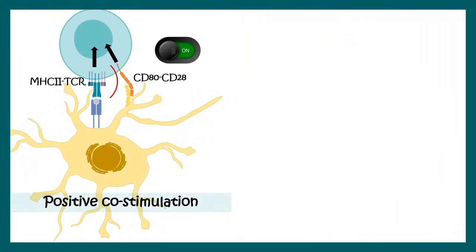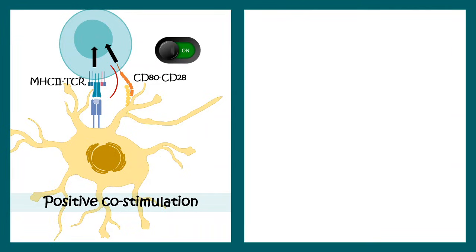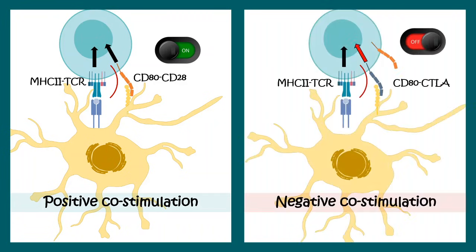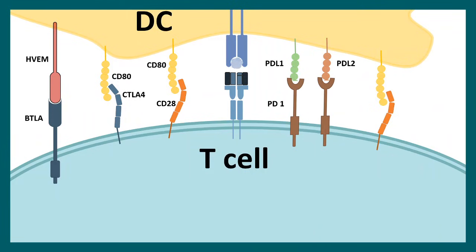Positive stimulation is not the only type of interaction that happens in the case of a T cell. There are negative co-stimulatory receptors as well, such as CTLA. The CTLA and CD80 interaction leads to an inactivation of T cell responses. This means positive and negative co-stimulatory receptors maintain a balance of T cell activity.